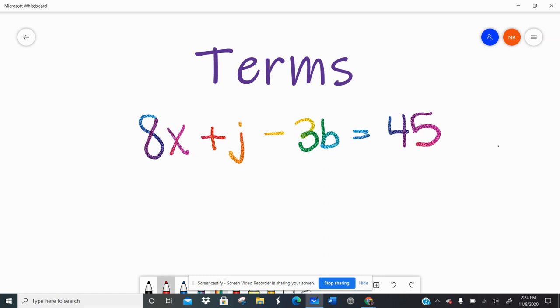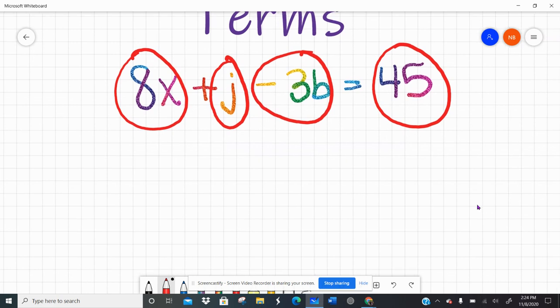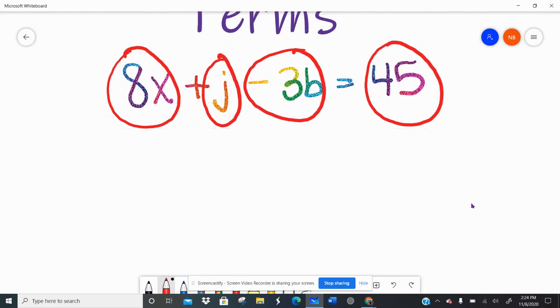There are things in between the signs. So like 8x would be a term. J is a term. Negative 3b is a term. 45 is a term. So the terms are the parts of the equation, expression or inequality. So this equation has four terms, right? The pieces of the puzzle.